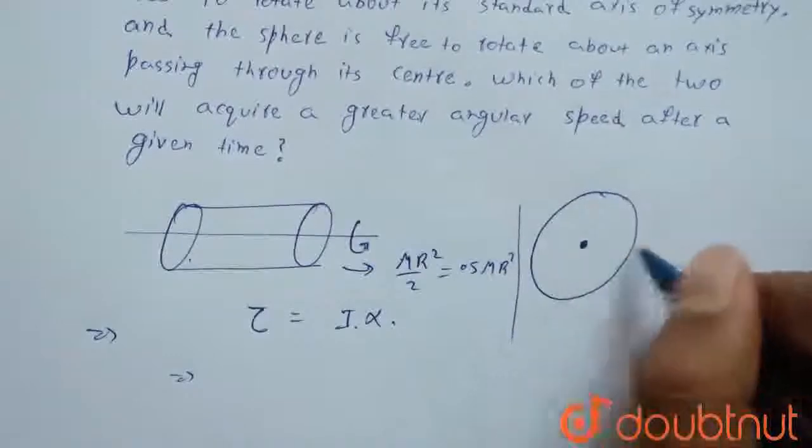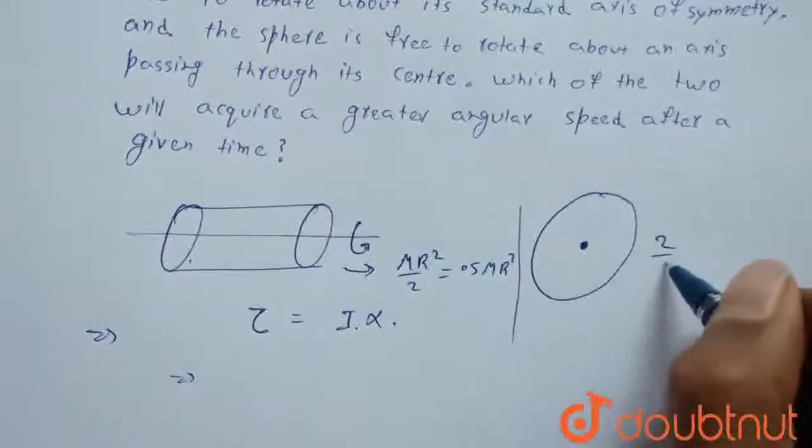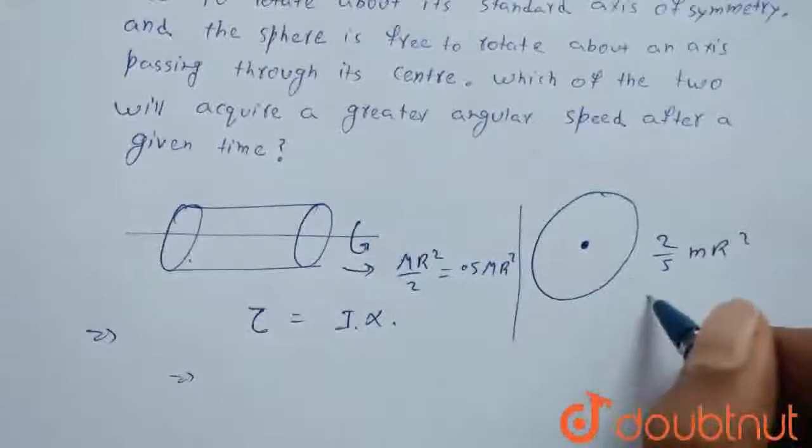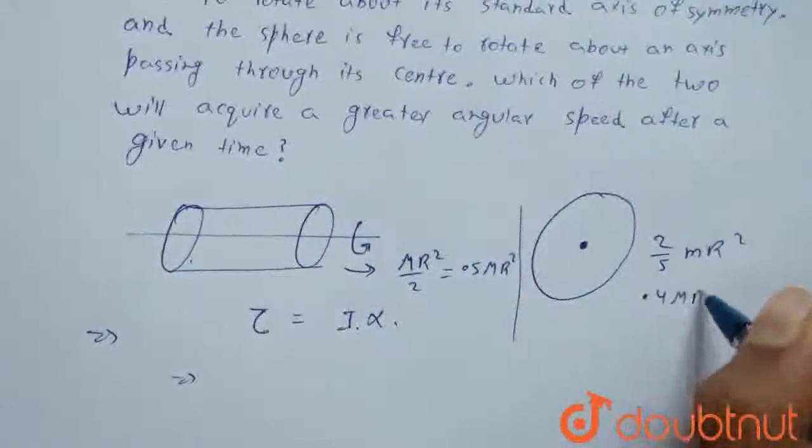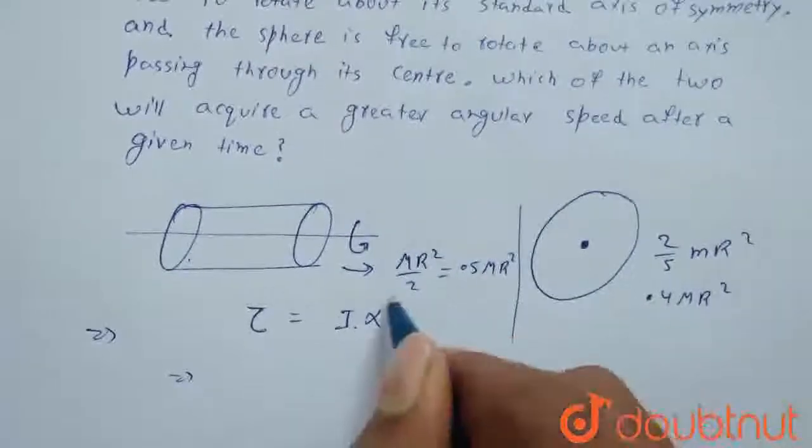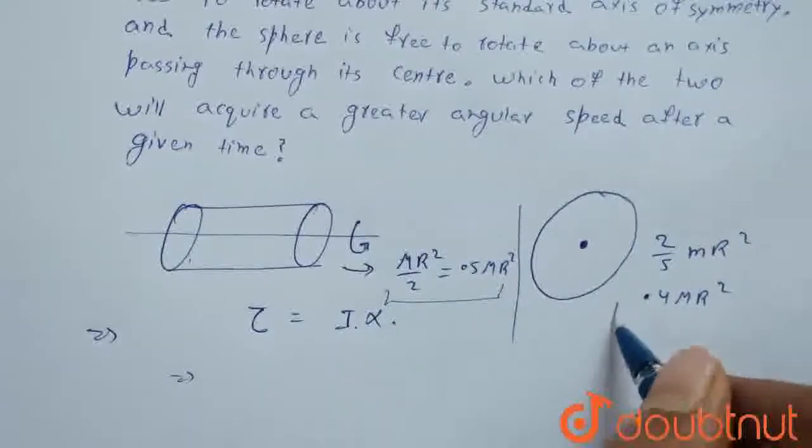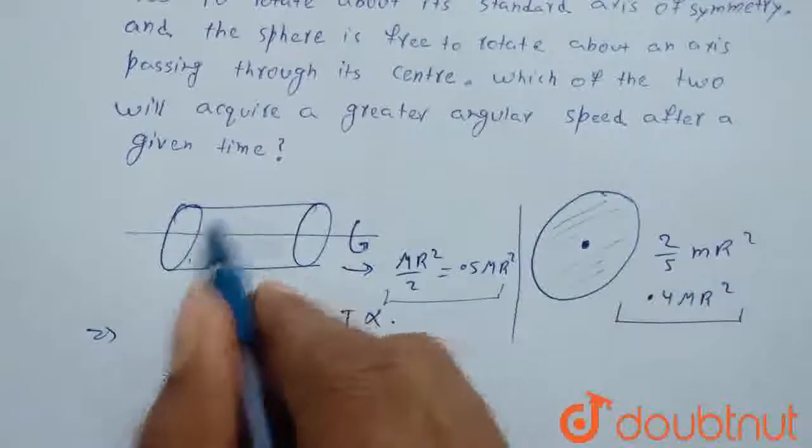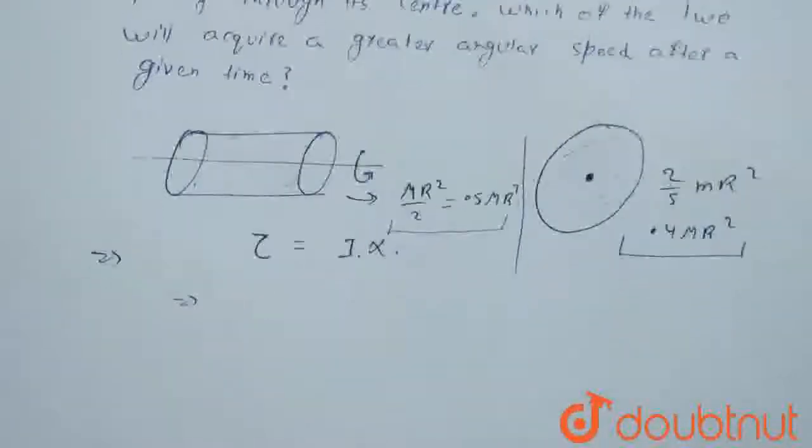And for a solid sphere, its moment of inertia is 2/5 MR², or you can say 0.4 MR². As you can see, moment of inertia for the solid sphere is less compared to the moment of inertia for the cylinder.